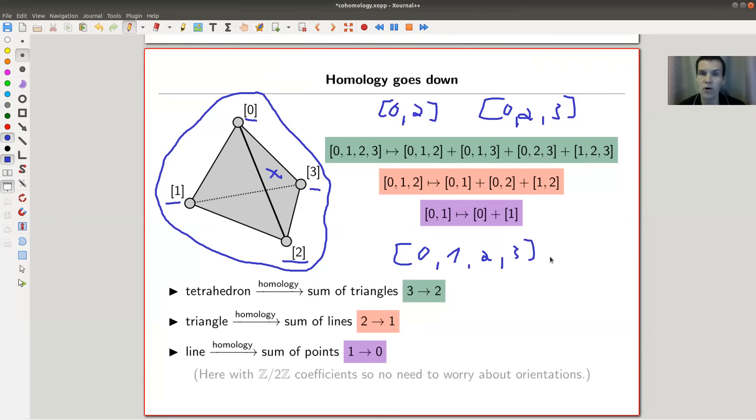And what homology then does in one way or the other is it throws those things into your space. And it looks at the corresponding boundary maps. So it wants to associate to a tetrahedron a sum of triangles. For example, my tetrahedron, which is the only tetrahedron in my example here, is sent to the sum of its four faces. So the corresponding triangles 1, 2, 3; 0, 1, 2; 0, 1, 3.